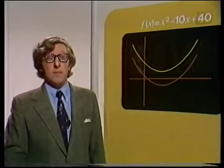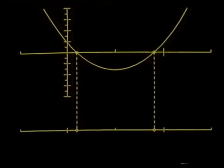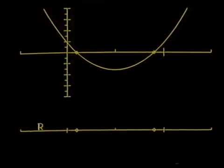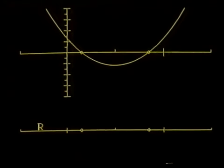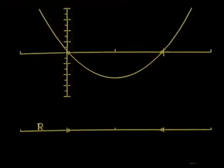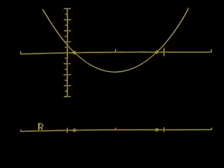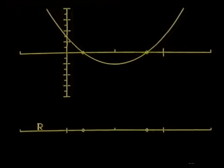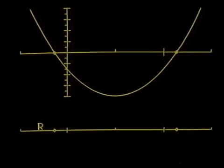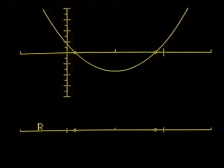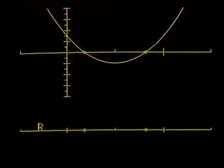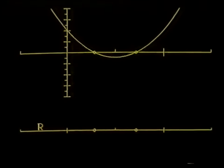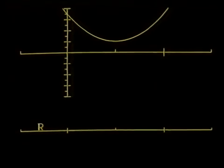Let's take a look at the behavior of the roots of a quadratic equation. Initially the quadratic has two roots — we can plot the roots on a copy of the real line R. See how the roots change as we alter the position of the curve. Here they're coincident. A little below, two roots. A little above, no roots.